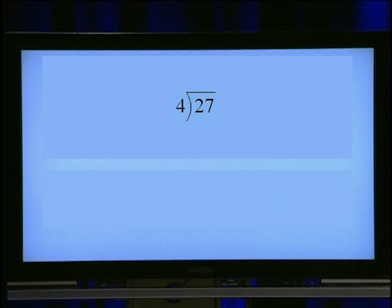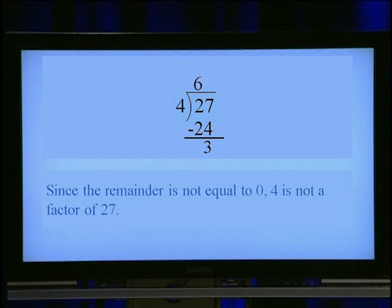Now dividing 27 by 4: 4 times 6 is 24, and 27 minus 24 gives remainder 3. Since the remainder is not equal to 0, 4 is not a factor of 27. This fact can be stated as a theorem called the factor theorem.